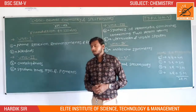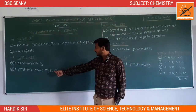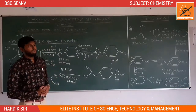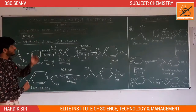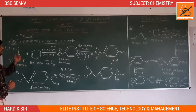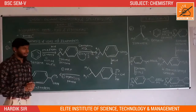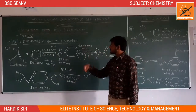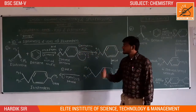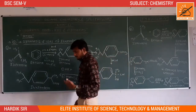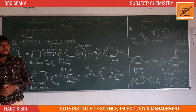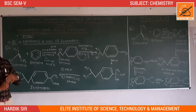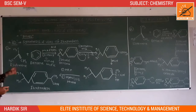Now we start unit number two, chapter number two: synthetic drugs, dyes and pigments. This chapter is divided into three parts: drugs, dyes and pigments. Our first part is drugs. Now we learn about the formation process, synthesis and uses of ibuprofen.